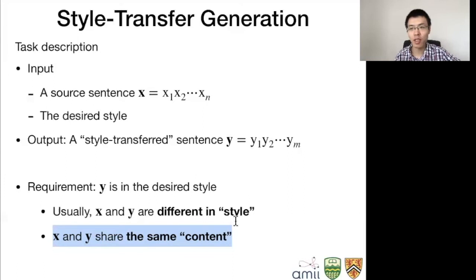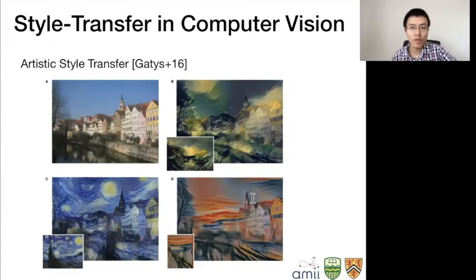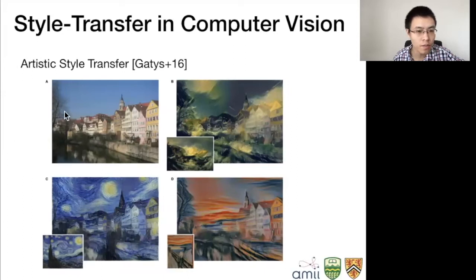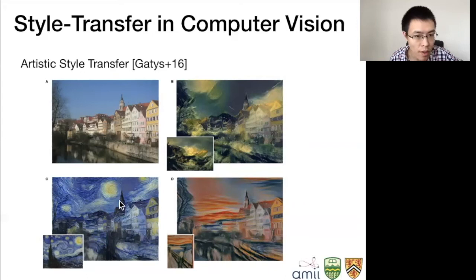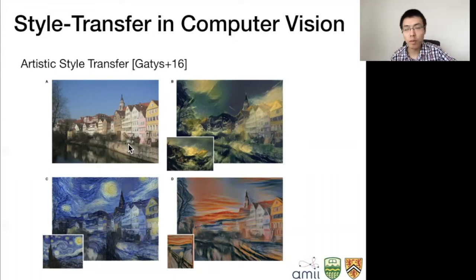Style transfer generation actually originates in the computer vision domain. Here is an example of artistic style transfer — given a photo, by changing some statistics of images, you can transfer it to different artistic styles, like Van Gogh. You see these are the buildings and the river as in the photo, but the style, like the color or the strokes, is definitely not the style of the original photo.